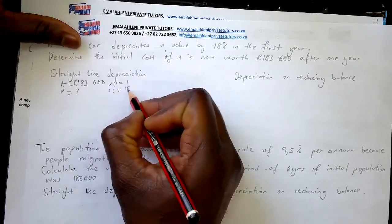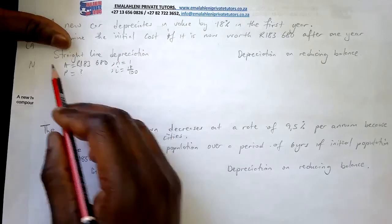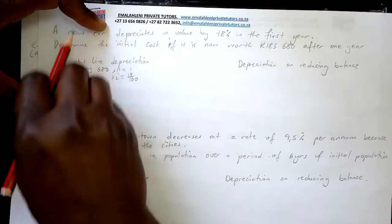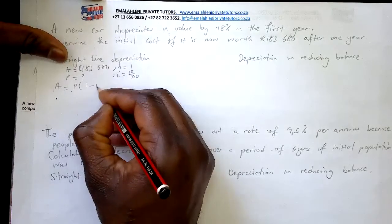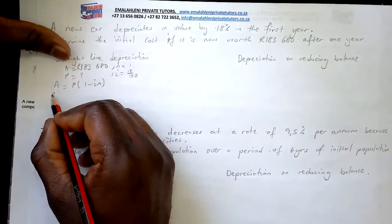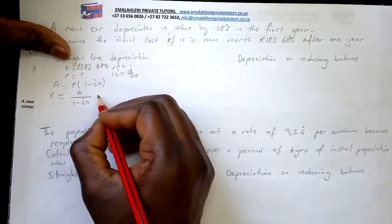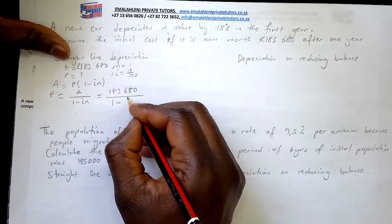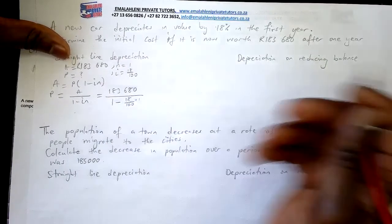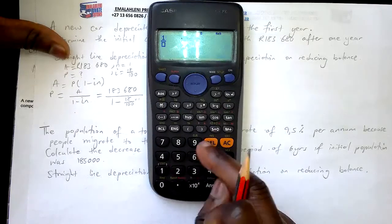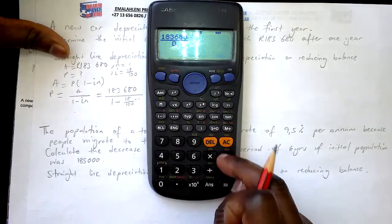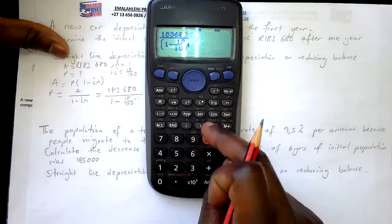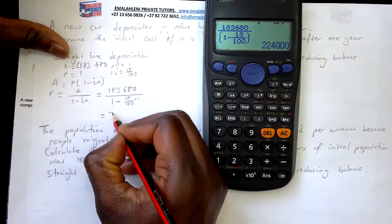For straight-line depreciation, the formula A = P(1 - in) rearranges to P = A / (1 - in). So P = 183,680 / (1 - 18/100 × 1). Putting this into the calculator: 183,680 divided by (1 - 0.18) gives us 224,000. This car was originally costing 224,000 — you can see the depreciation clearly.